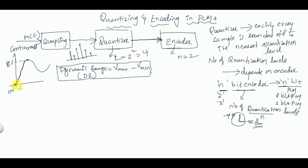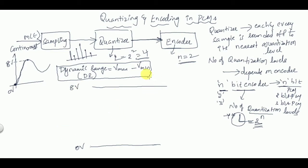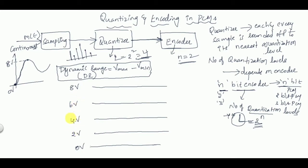The amplitude values are from 0 to 8 volts. For this example I'm taking a 2-bit encoder, so the quantization levels are 4 in number. How do we divide the range into 4 quantization levels? The first level is 0 volts and the highest is 8 volts. Dividing into 4 levels: 0, 2, 4, 6, and 8 volts — giving level one, level two, level three, and level four.